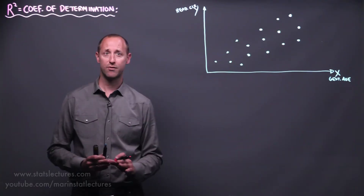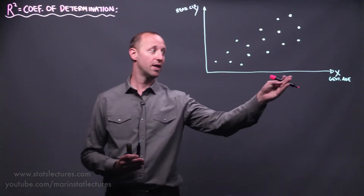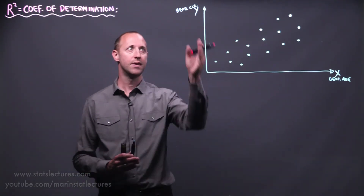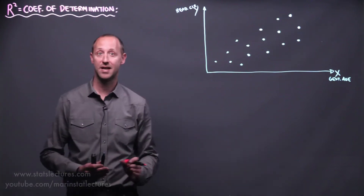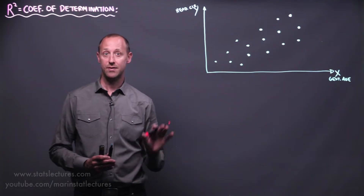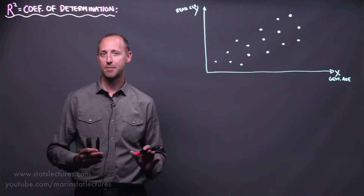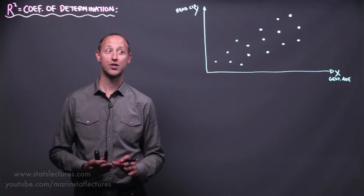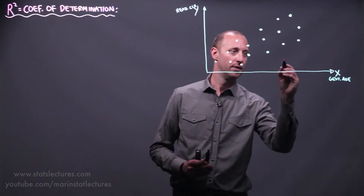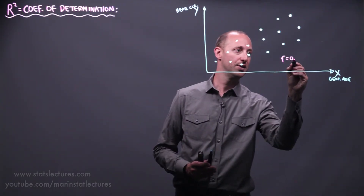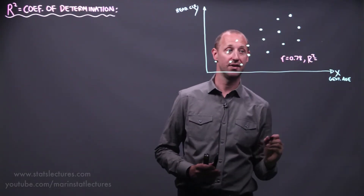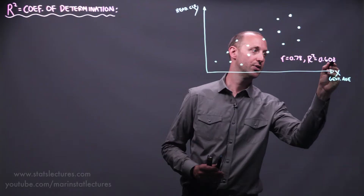We're going to revisit this example we looked at before, looking at the relationship between gestational age — roughly the length of the pregnancy in days — and the head circumference in centimeters of 39 babies. In the case of simple linear regression, r-squared happens to be Pearson's correlation coefficient squared. We found that Pearson's correlation is 0.78, so r-squared equals 0.78 squared, which comes out to be 0.608.